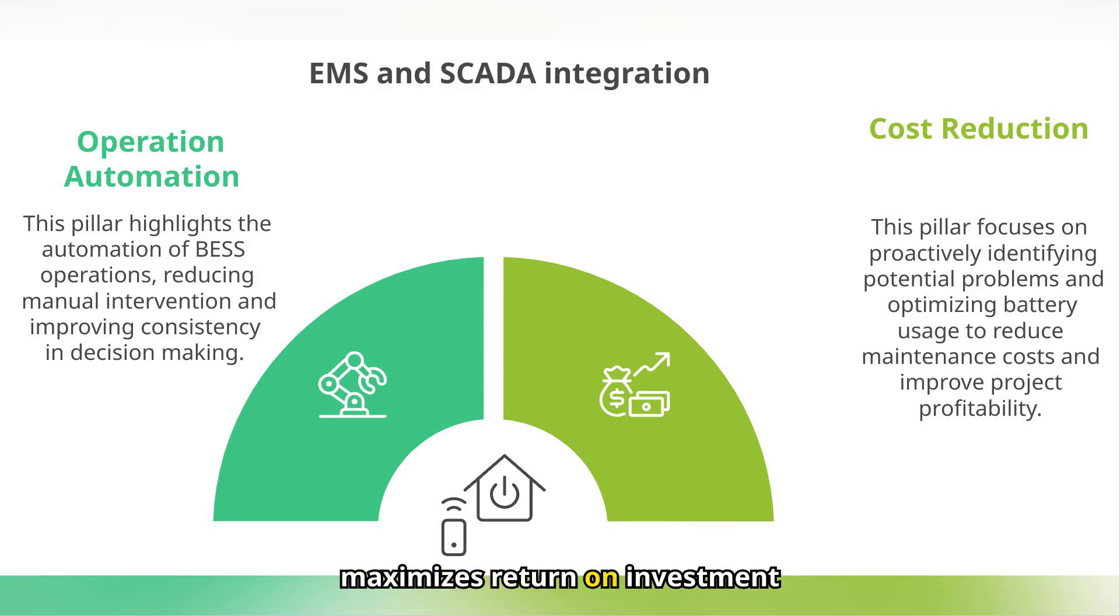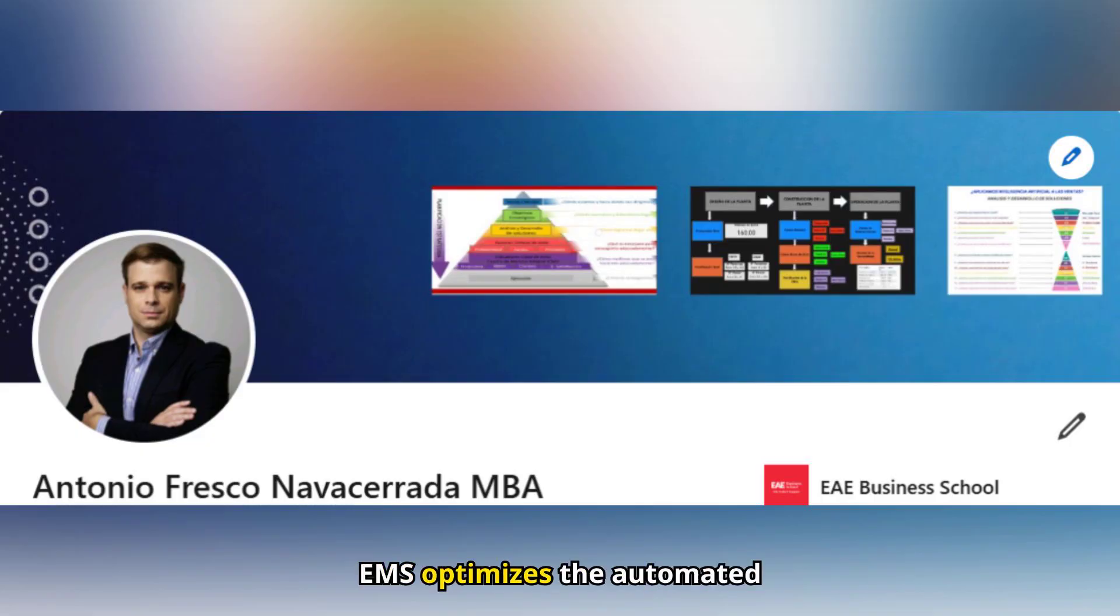In summary, EMS optimizes the automated operation of the system, while SCADA provides the data needed to make real-time decisions.